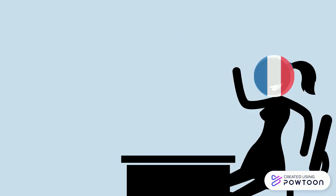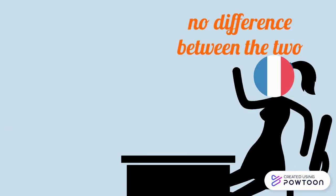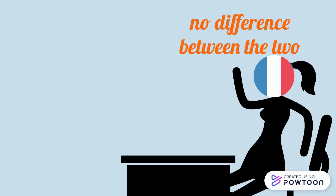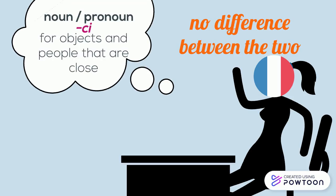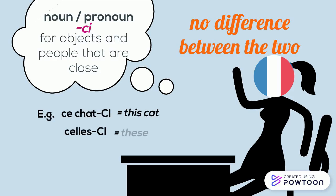However, in French, there is no difference between the two. If needed, we can make this difference by adding either '-ci' after the noun or the pronoun to talk about objects and people that are close — for instance, 'ce chat-ci' (this cat), 'celle-ci' (this one).